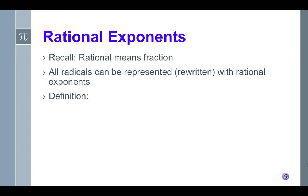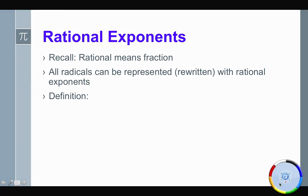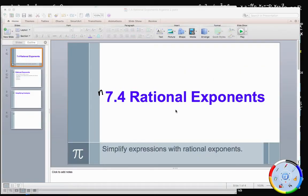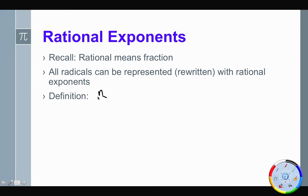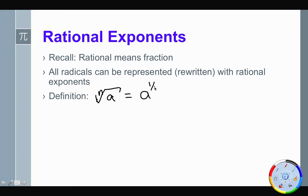Our definition here is going to be pretty straightforward. The nth root of some number — let's call that number a — is equal to a to the power of one over n. So the index, the n there, becomes the denominator of our exponent.